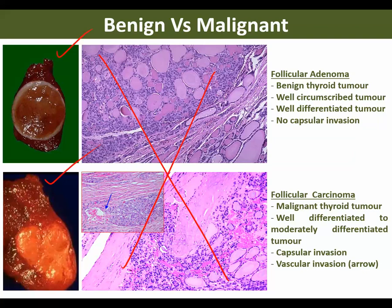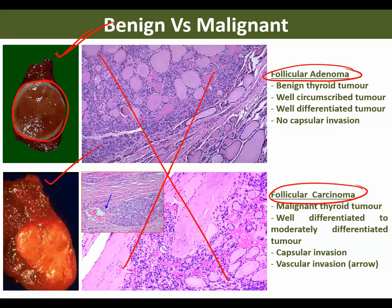This is the benign thyroid tumor — follicular adenoma. This is the cancerous thyroid tumor — follicular carcinoma. The benign one is well circumscribed and has a capsule, whereas the malignant one is not having any circumscription. It is follicular carcinoma.